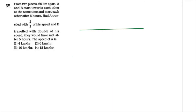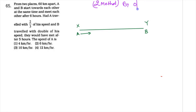The speed of A — we will solve this using two methods. One method is by options, which will be faster, and the other method is the conceptual method.